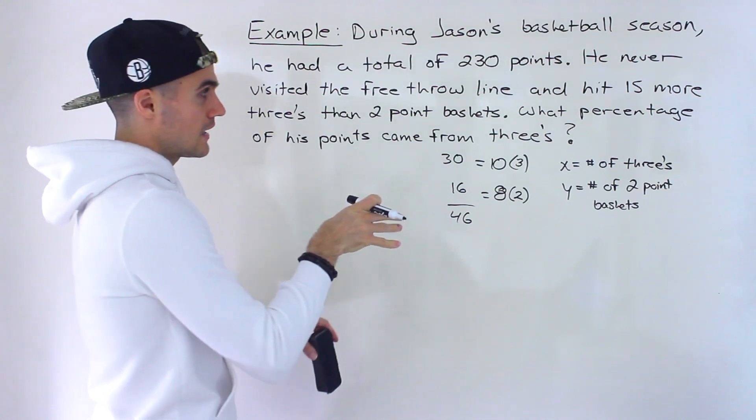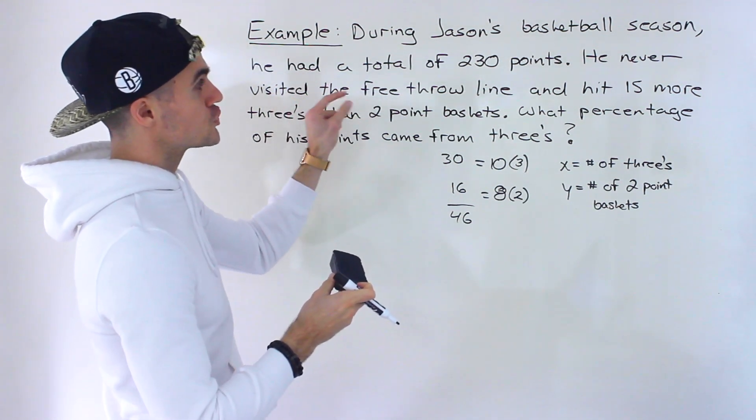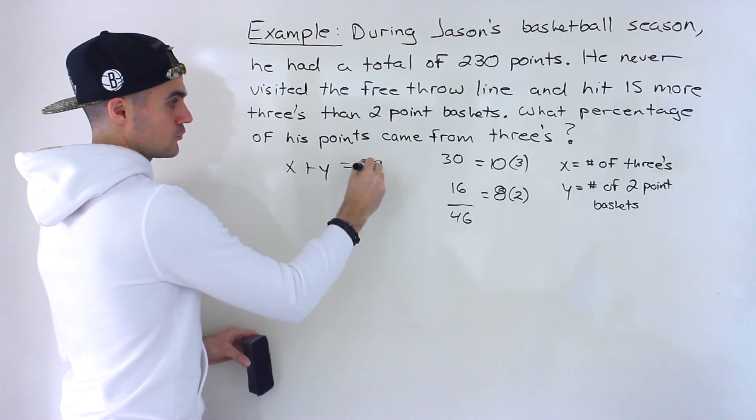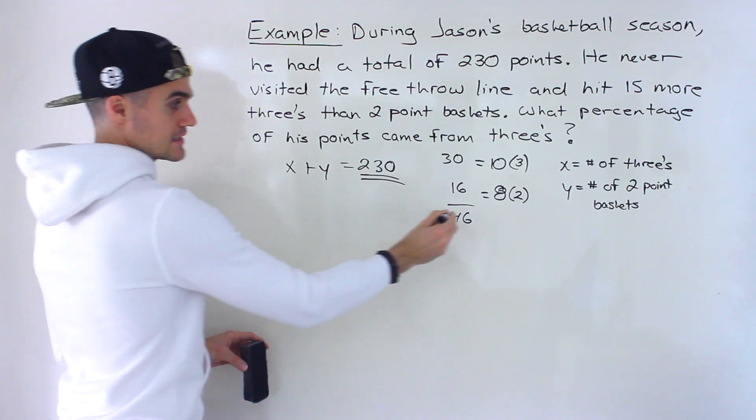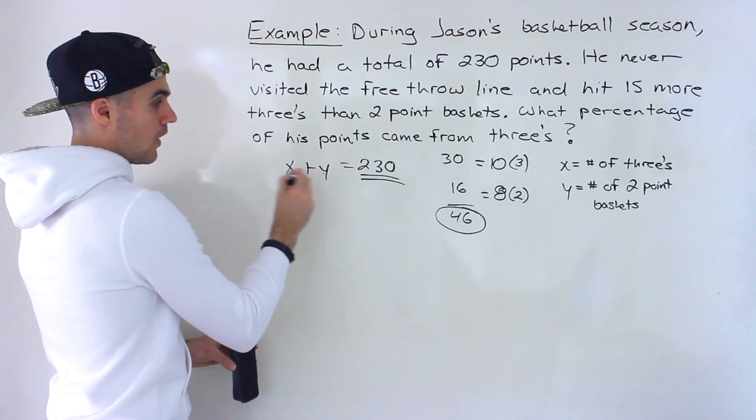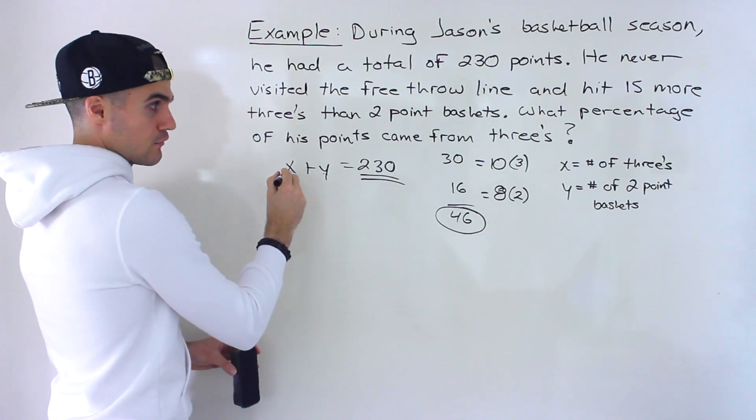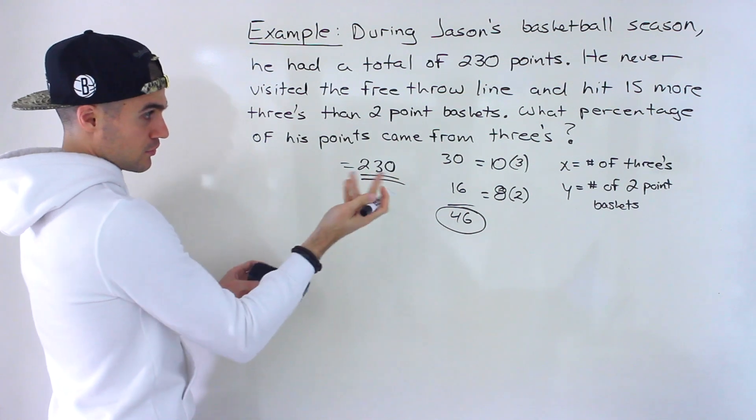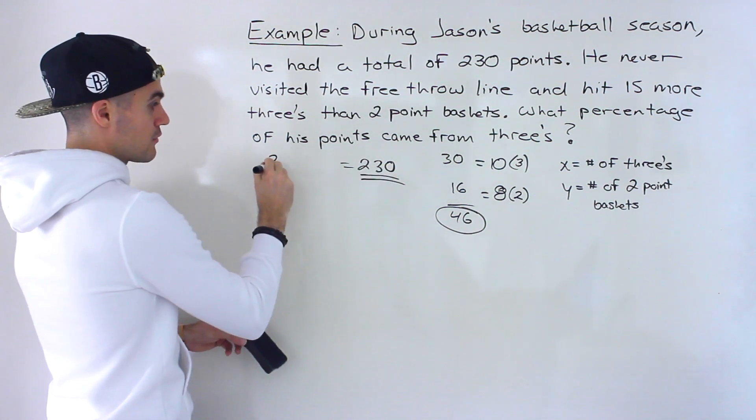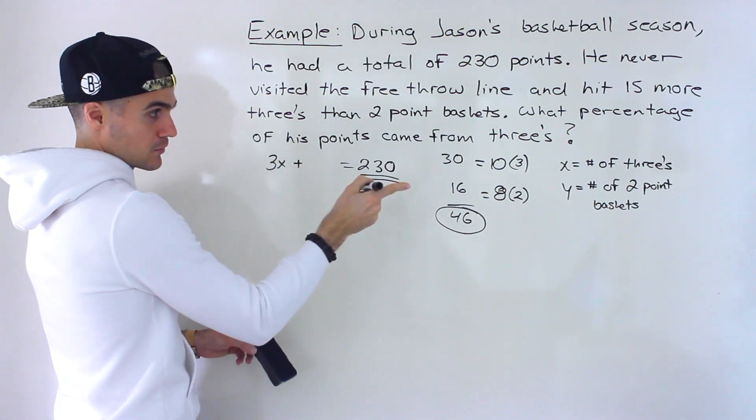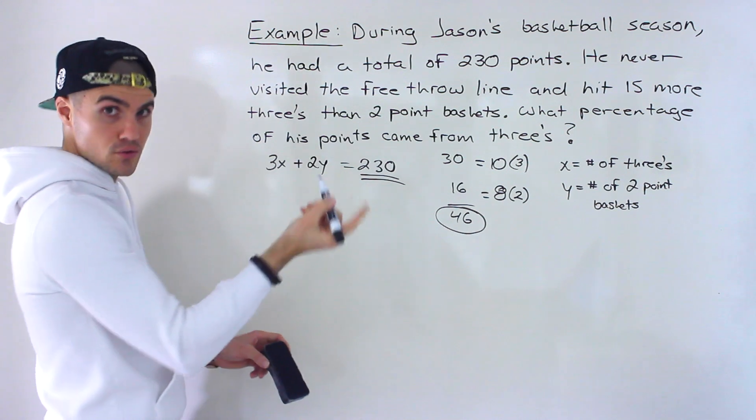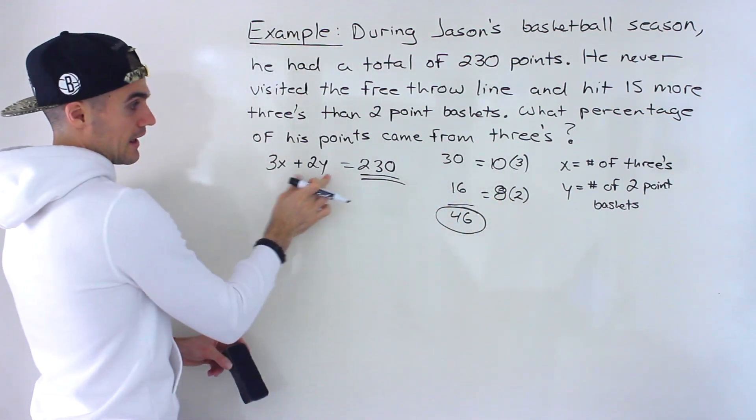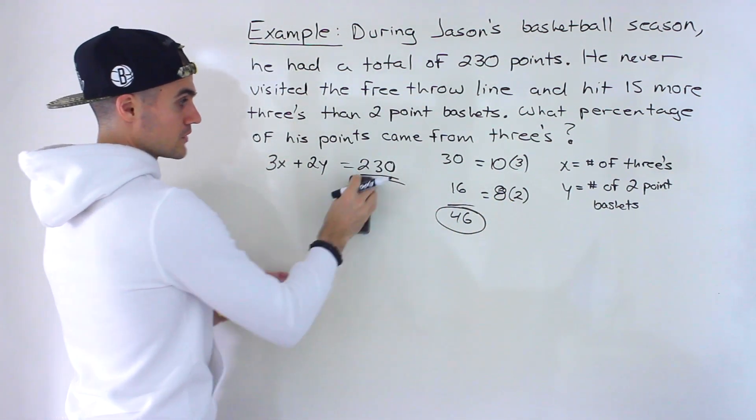And that information is important when creating this equation, because notice he had a total of 230 points. So you've got to be careful. It's not x plus y equals 230 because these are points. The x and the y, those are the number of threes, the number of two-point baskets. So the correct equation in this case, the number of threes, which is x, multiplied by three, because each of them is going to have three points, and then the number of two-point baskets multiplied by two, because each of those is going to have two points. And that's going to be the total number of points right there.